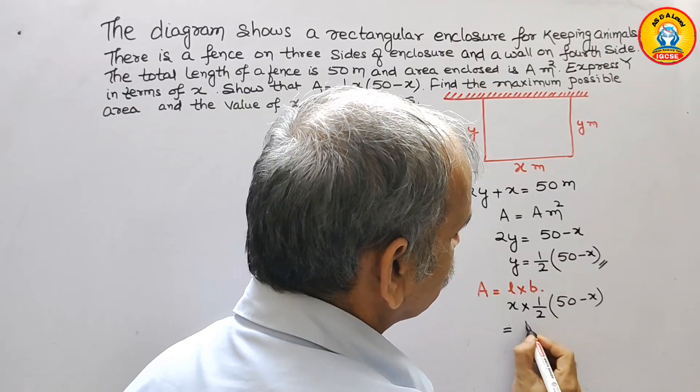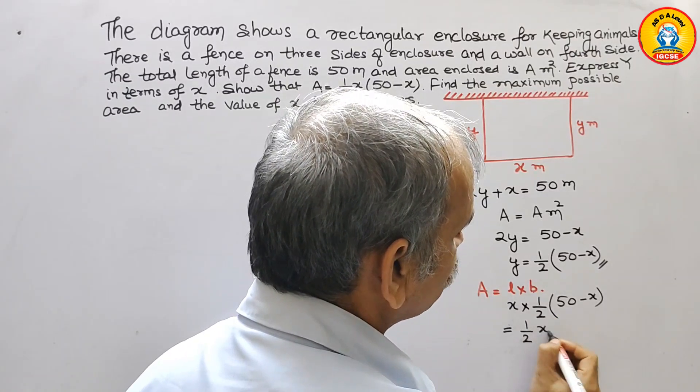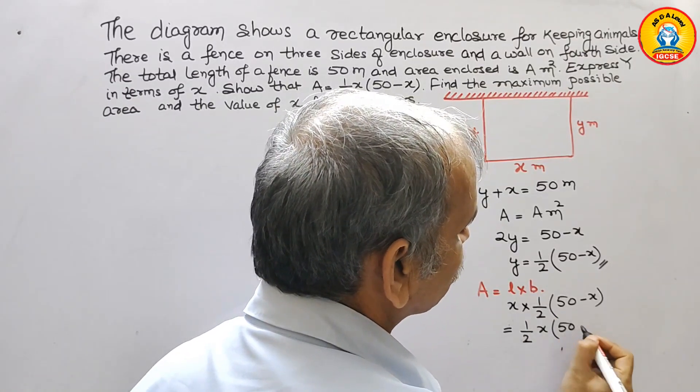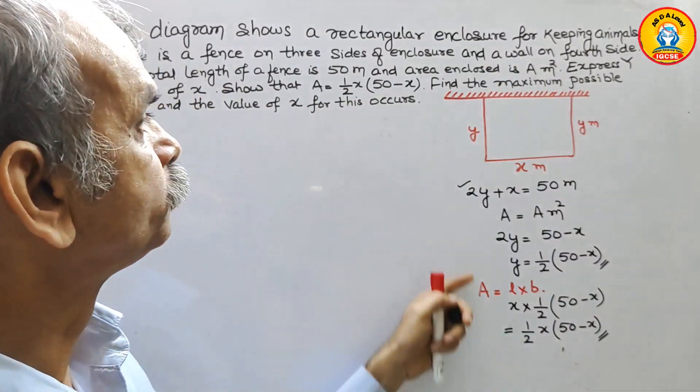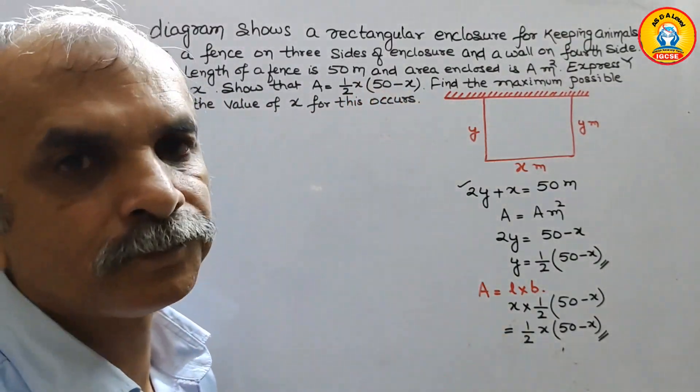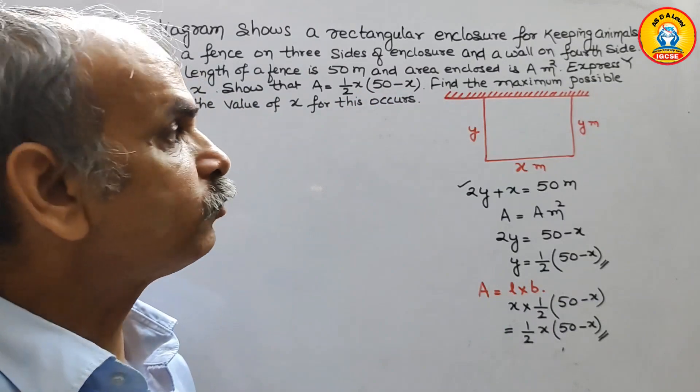That is equal to we can say 1 by 2 x into 50 minus x. They have told us to prove this. Proved. Next what they have told? Find the maximum possible area.